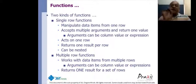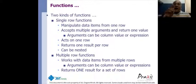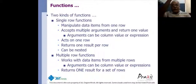A multi-row function works on a single column of multiple rows. A single row function works on multiple columns of a single row. So either we work along a row or we work down a column, and that is how we perform mathematical operations on this data.